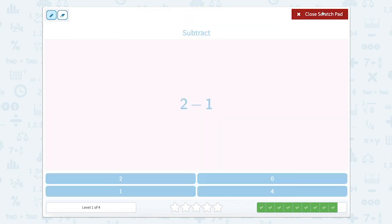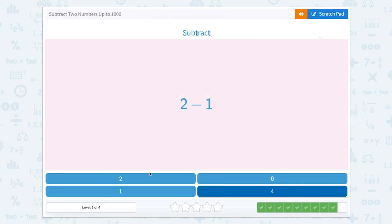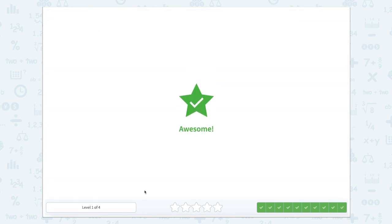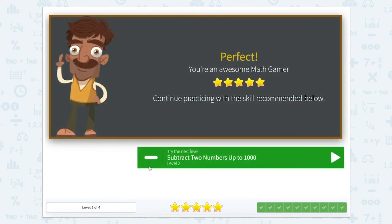Now we have two minus one. One, two, take away one. Well we're left with one. Awesome job. Good job subtracting two numbers up to a thousand.